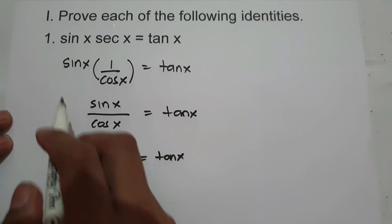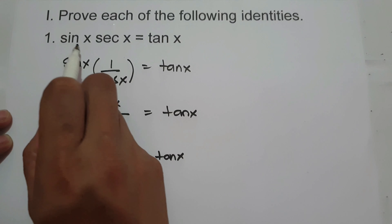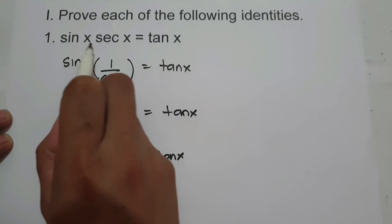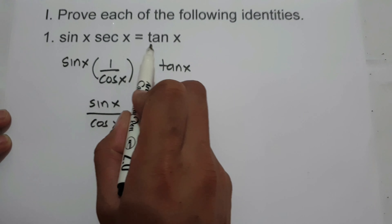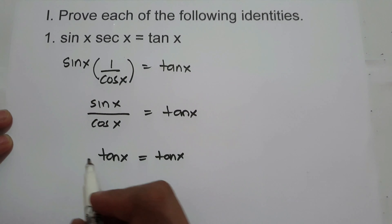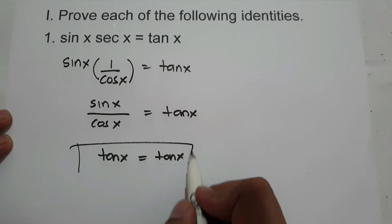Therefore, sin x over cosine x is equal to tangent x. We prove that sin x multiplied by secant x is equal to tangent x. And this will be our answer.